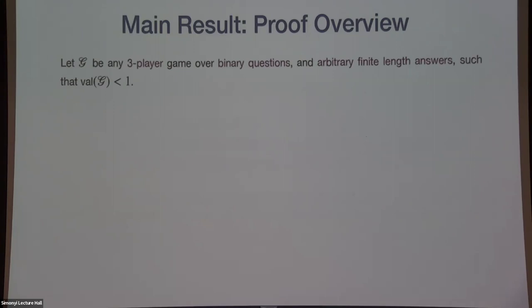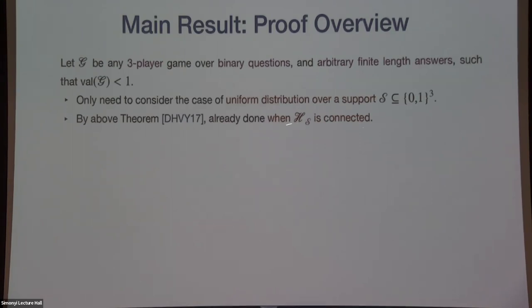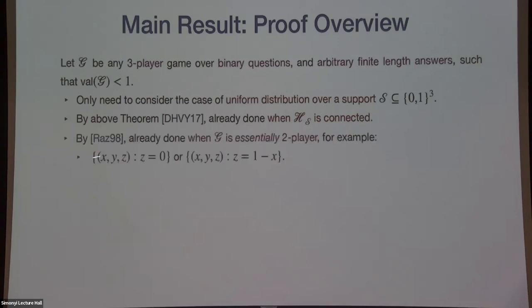Coming back to our theorem: we have a three-player game over binary questions. We only need to consider uniform distributions. By the above theorem, we are already done when the connection graph is connected. By the two-player parallel repetition theorem of Raz, we are also done when the game is essentially two-player — for example, if Z is always zero (third player does nothing), or if Z equals the negation of X (first and third player know each other's input in all coordinates).